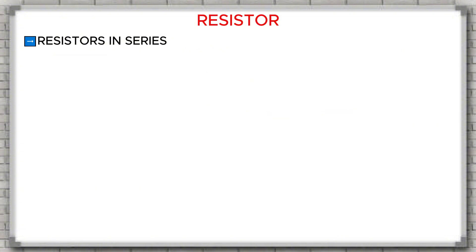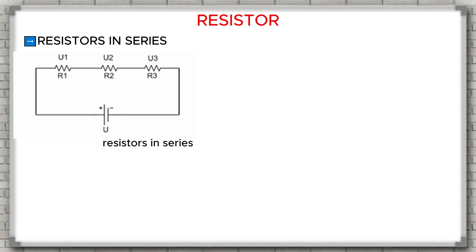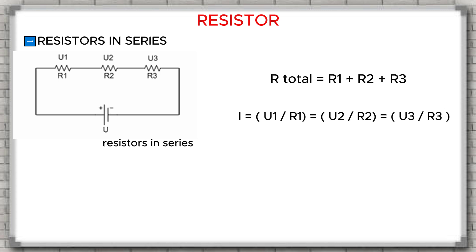Now, let's learn about resistors in series. Resistors in series are when the resistors are connected one after another in a single path so that the electric current flows through each resistor one at a time, from the first to the last. When resistors are connected in series, the total resistance is equal to the sum of all the individual resistors. We have the formula: R total equals R1 plus R2 plus R3. Another important point is that the electric current flowing through resistors in series will have the same value at every point in the circuit.